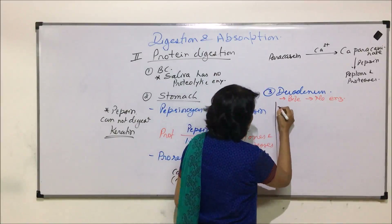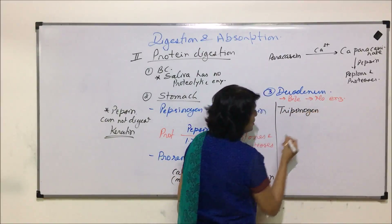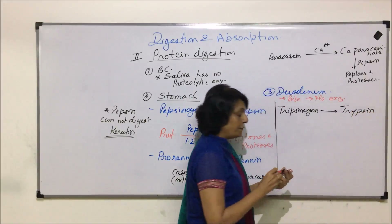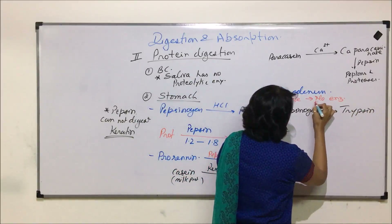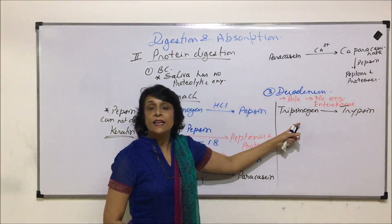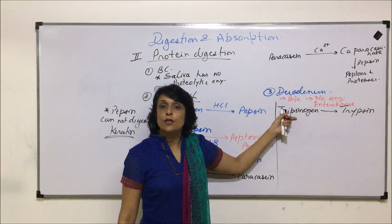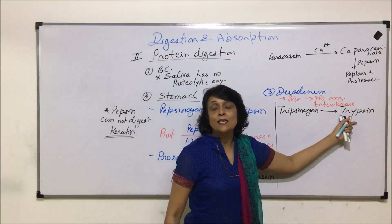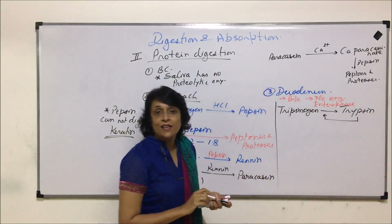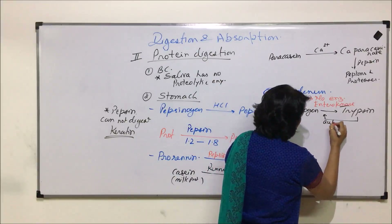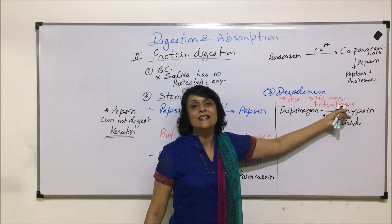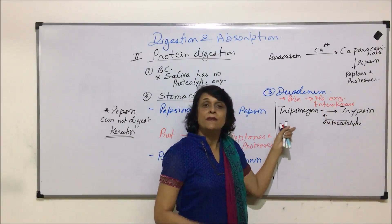In pancreatic juice there are two very strong proteases, both in inactive form. The first is trypsinogen, which must be converted into its active form, trypsin. This activation is done by enterokinase, which is present in intestinal juice. Once a few molecules of trypsin are activated by enterokinase, trypsin helps in its own further activation — this is known as autocatalytic action.